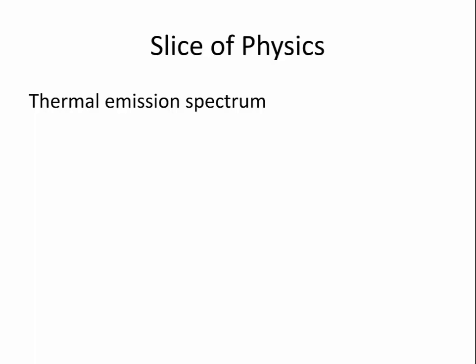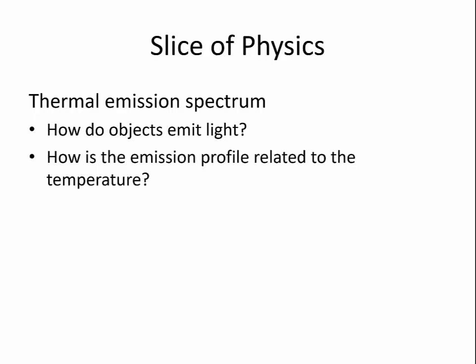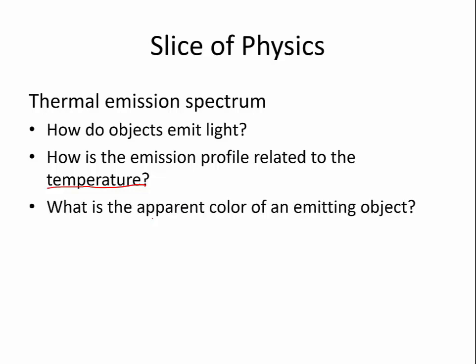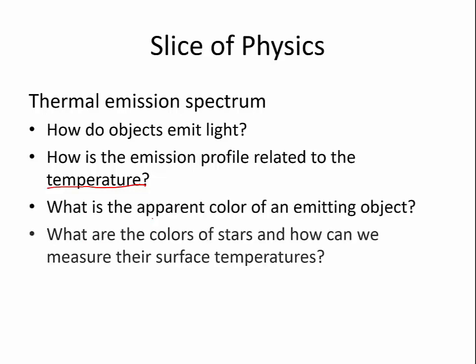In this video, we're going to talk about how objects put out light across the electromagnetic spectrum, which is called the thermal emission spectrum. And then we'll see the connection that there's one property of the object that determines the entire profile of how it puts out light across various wavelengths, and that property is the temperature. In the context of this, we will see how different objects of different temperatures appear to be different colors, and we will talk about how we can use this relationship to determine the temperatures of stars.